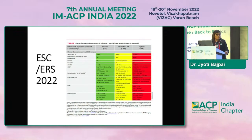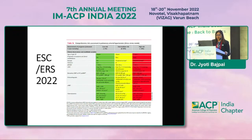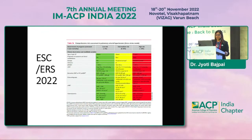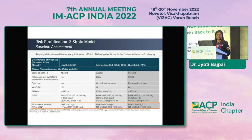Risk stratification is key to PH management. The 2022 guideline uses three- and four-strata risk stratification with ten parameters: symptoms or heart failure signs, disease progression, WHO functional classification, 6-minute walk test, cardiopulmonary exercise testing, BNP and NT-proBNP, echocardiography, cardiac MRI, and hemodynamics via right heart catheterization. For example, a 6-minute walk distance ≤165 meters, BNP >800, or NT-proBNP >1100 classifies a patient as high-risk.